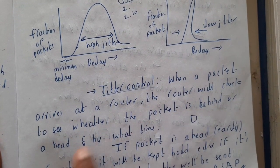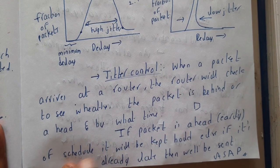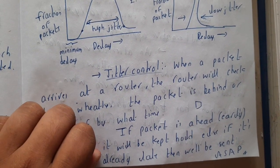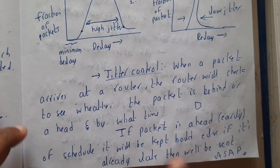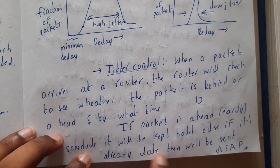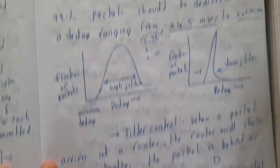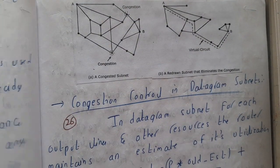So when a packet arrives at a router, the router will check to see whether the packet is behind or ahead by time. If the packet is ahead or early of the schedule, it will hold it and not let it go until the time is up. Else if it is already late, then it will send it ASAP, pushing it into the packet path in which it should go.